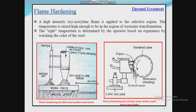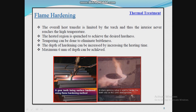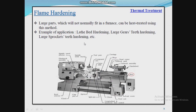The progressive method is used to harden large areas that are beyond the scope of the spot method. The size and shape of the workpiece, as well as the volume of oxygen and fuel gas required to heat the specified area, are the main factors for selection of method. A maximum depth of 6 mm can be achieved, and the heated region is quenched to achieve the desired hardness. In flame hardening, large parts that would not normally fit in a furnace can be processed using this method. Applications include lathe bed hardening, large gear teeth hardening, and large sprockets teeth hardening.